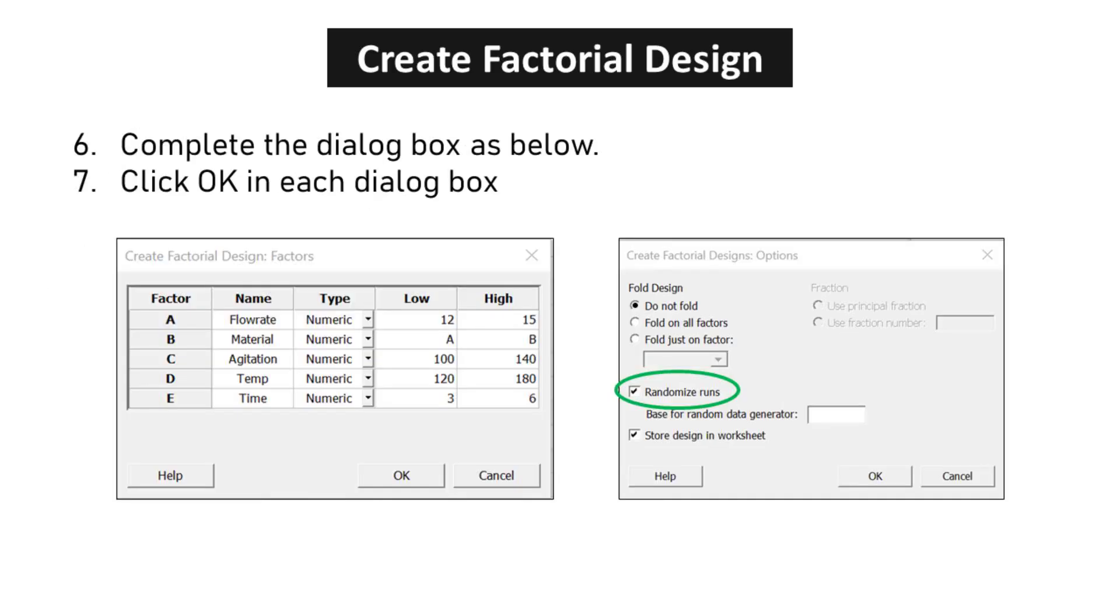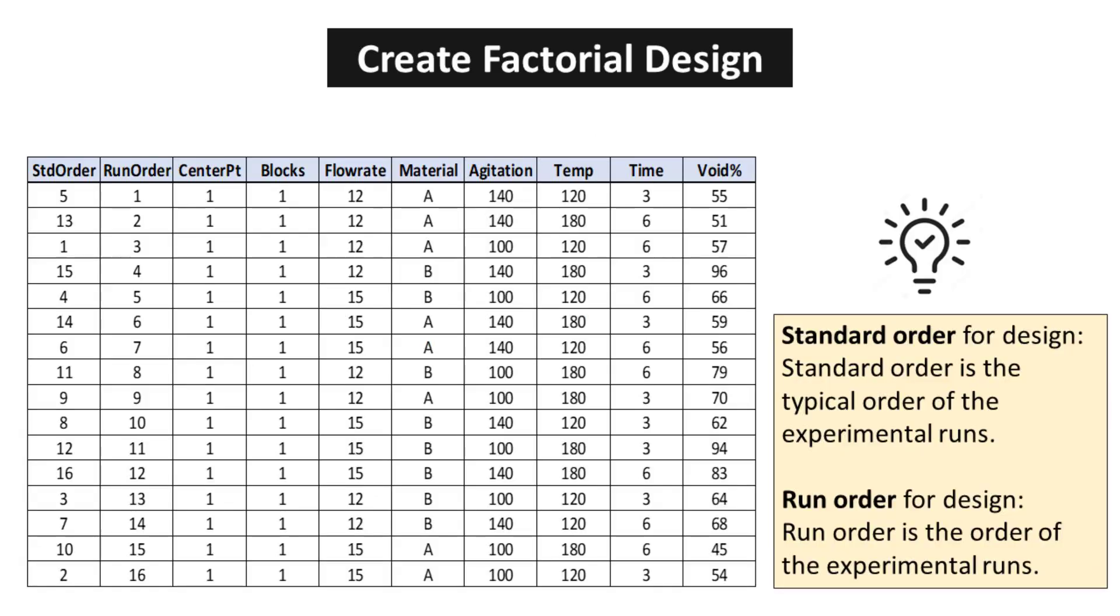Click OK in each dialog box. The table presented here displays the outcomes of the design experiment regarding void percent. Standard order is the typical order of the experimental runs. Run order is the order of the experimental runs.